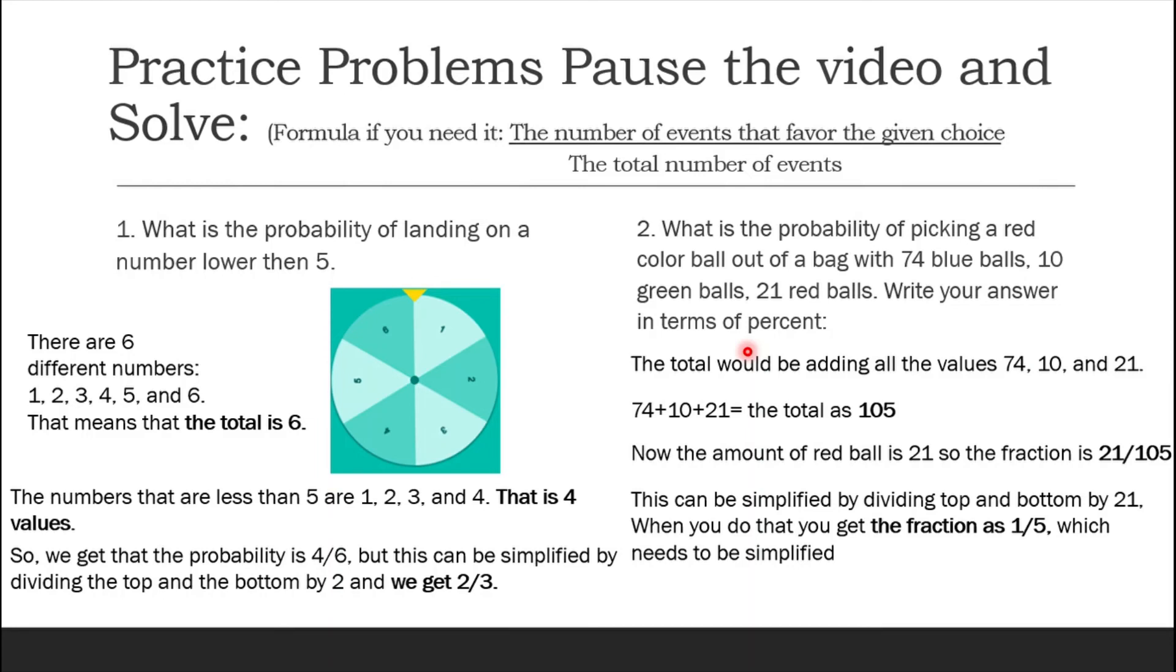Now it needs to be turned into a percent. In the other problem I didn't simplify 7 over 14, but 21 over 105 is much harder than 1 over 5. So why not just turn it into 1 over 5. Turning this into a decimal first we know that 1 divided by 5 is 0.2 and then this becomes 20 percent. So the answer for number 2 is 20 percent.